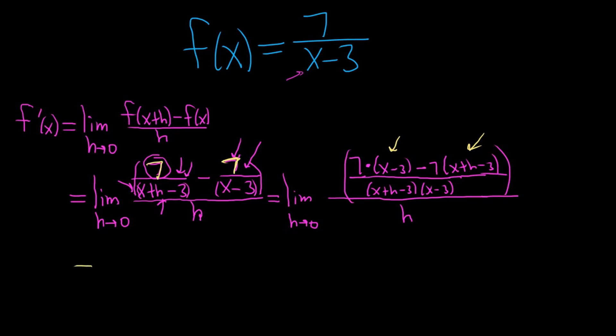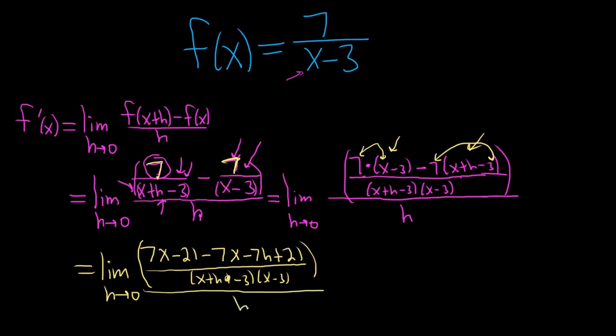Let's go ahead and distribute. So this is the limit as h approaches 0. We have 7 times x, that's going to be 7x. And then 7 times 3 is 21 minus. Distributing the 7 will give us 7x minus 7h plus 21. It's all being divided by x plus h minus 3 times x minus 3, and this is in parentheses, and it's all being divided by h.